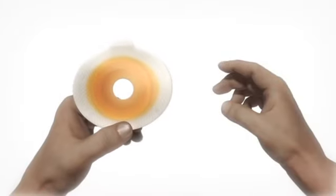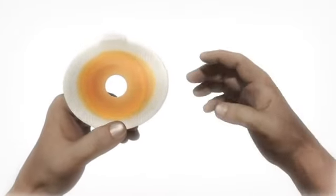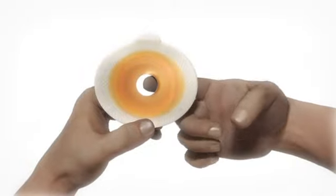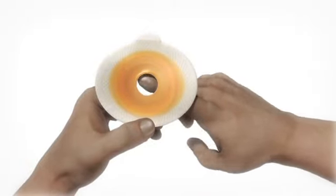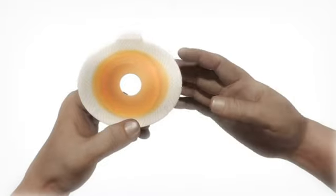After having removed the protecting film, you should even out the edges of the hole by running a finger around the edge. This is to prevent any unevenness of the edge.